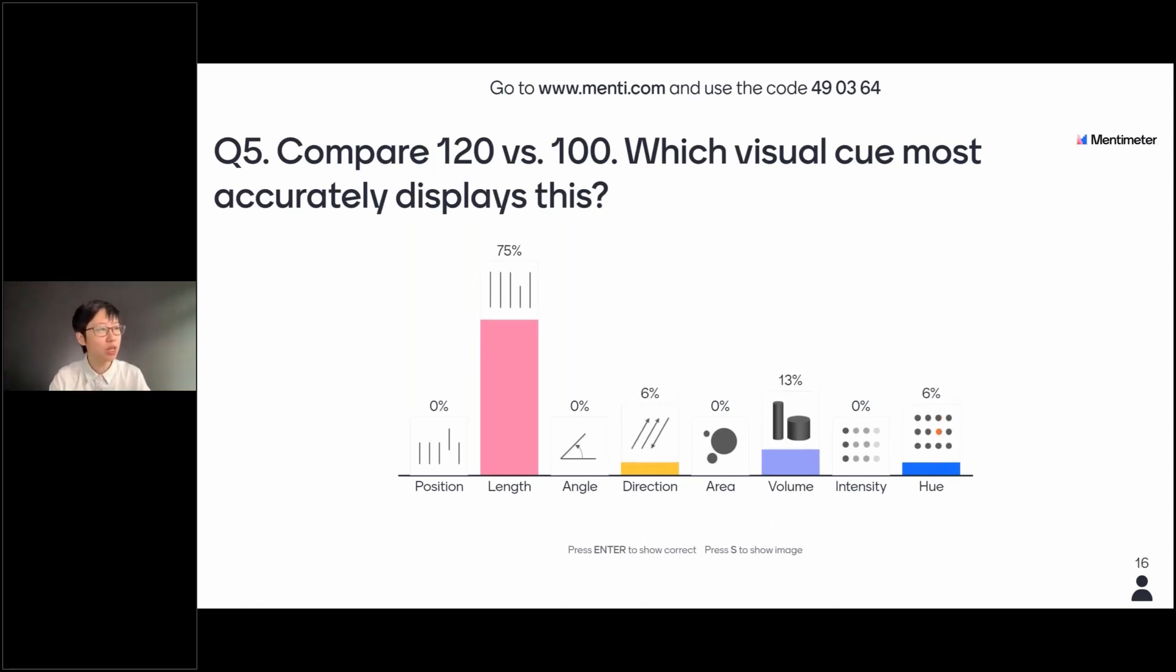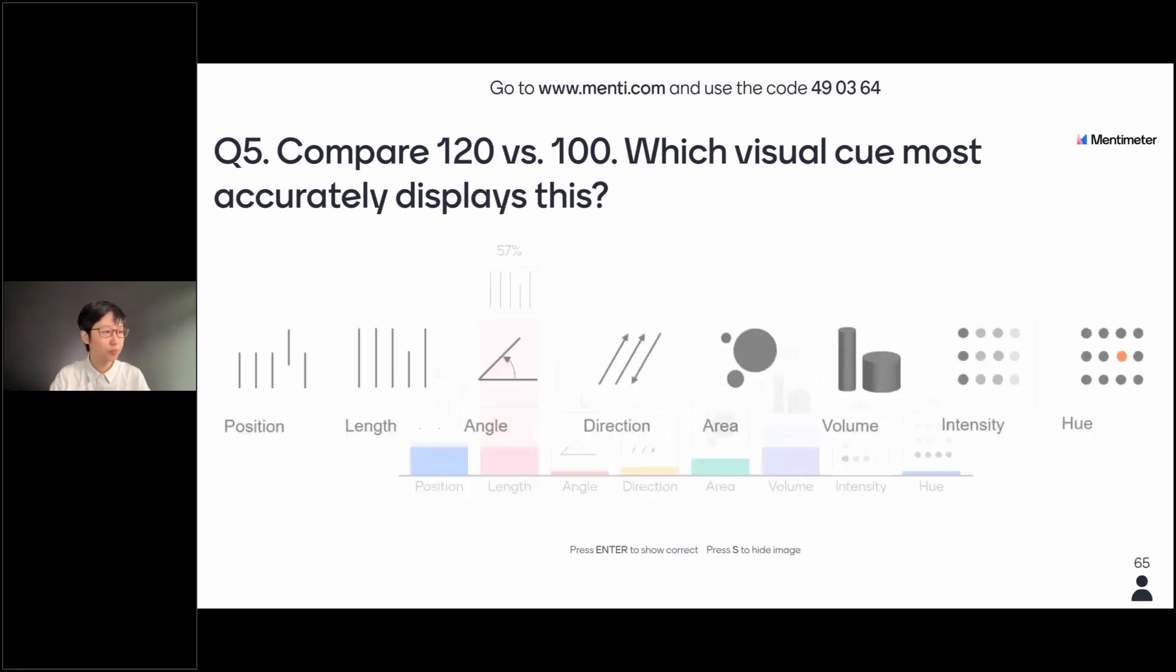Okay, so I think we have a very clear winner here. We have more than three quarters, now it's 80, 70% of the votes, it will be length. Now, position as well, it's starting to rise. So if you look at it, back to our charts, right? Position and length has the highest visual perception accuracy, and then it decreases to hue.